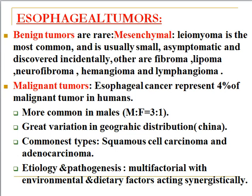There are two types of esophageal tumors: benign and malignant. Benign tumors are mostly mesenchymal — leiomyoma is the most common, usually small and asymptomatic, discovered incidentally. Others include fibroma, lipoma, neurofibroma, hemangioma, and lymphangioma. Malignant tumors are mostly carcinomas, representing about 4% of malignant tumors in humans, with the most common types being squamous cell carcinoma and adenocarcinoma.